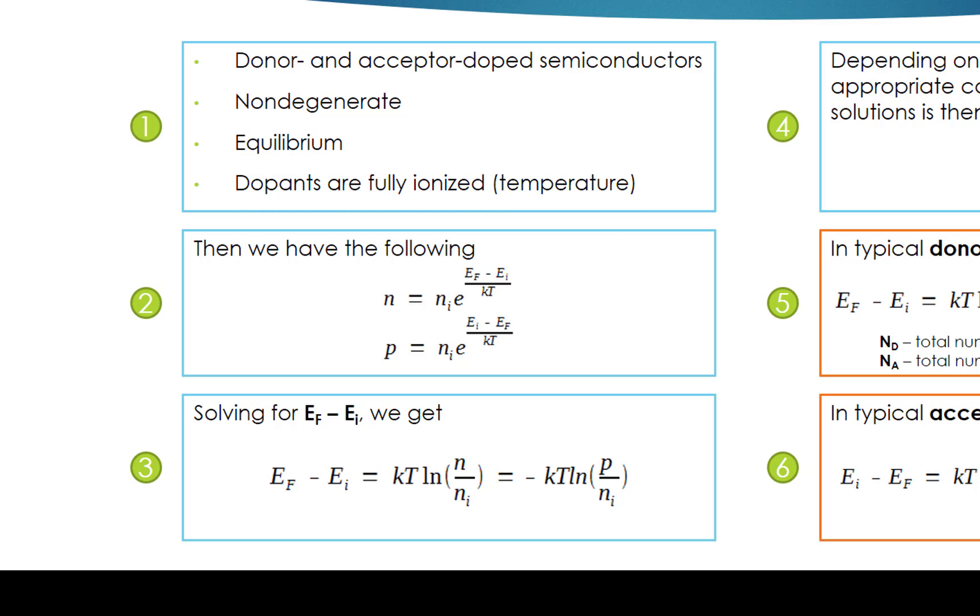Under these conditions, we can use the following carrier concentration formulas. N equals Ni times e to the power of (EF minus EI) over KT. P equals Ni times e to the power of (EI minus EF) over KT.